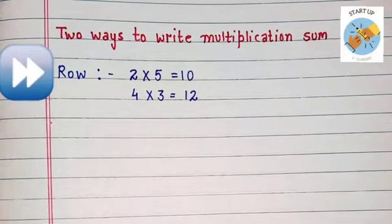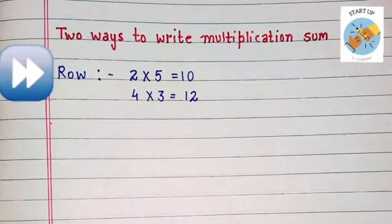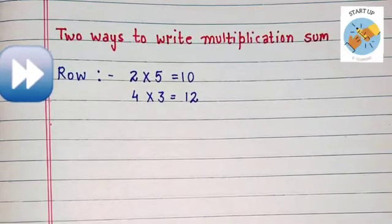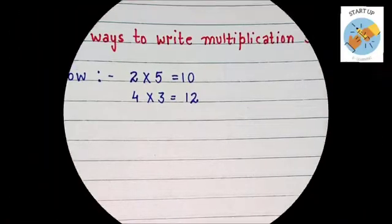See these two examples. 2 multiplied by 5 is equal to 10. 4 multiplied by 3 is equal to 12. These are written in a row.